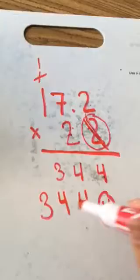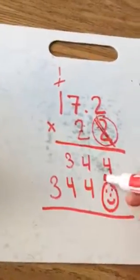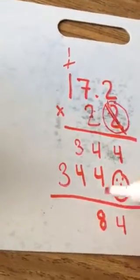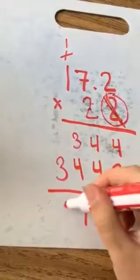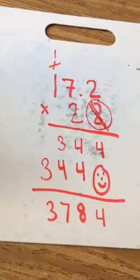So now I'm left with adding. And then we have another step, so stay tuned. 4 plus 0 is 4. 4 plus 4 is 8. 4 plus 3 is 7. And then 3.